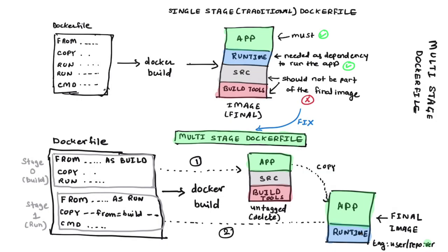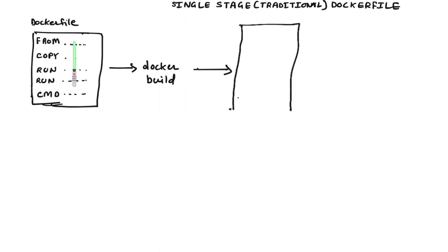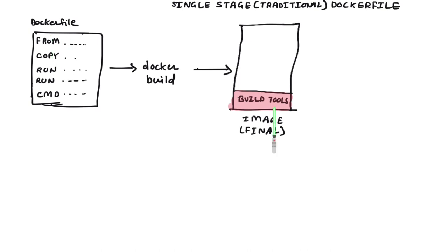Let's first look at why you need a multi-stage Dockerfile. To understand that, let's take an example of a simple Dockerfile with one stage only, where we have a few instructions including FROM, COPY, RUN, CMD, etc. When you start building an image with this Dockerfile, it launches a build process which starts with the base image defined by FROM, and then adds everything — including the build tools from the base image, source code, runtime dependencies, libraries, and finally your application.